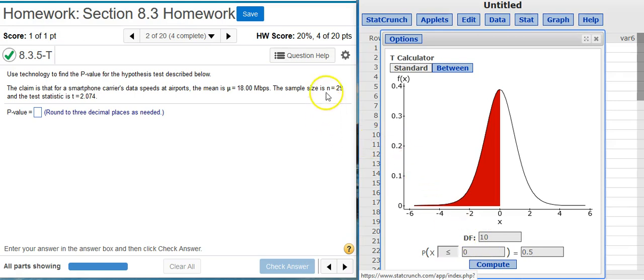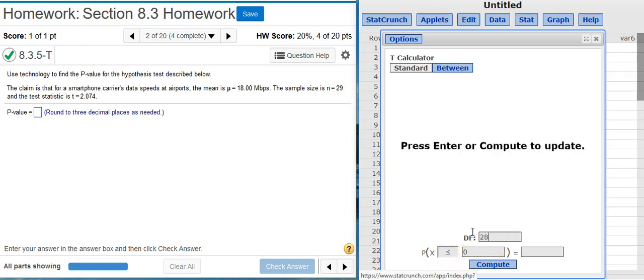Degrees of freedom is one less than the sample size, and that's why they give us the sample size here. In this case it's 29, so our degrees of freedom will be one less than that, which is 28.